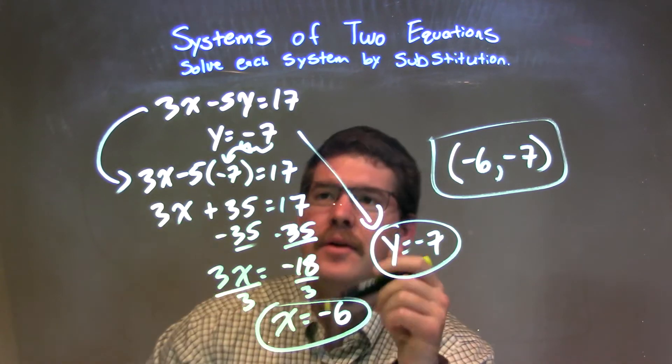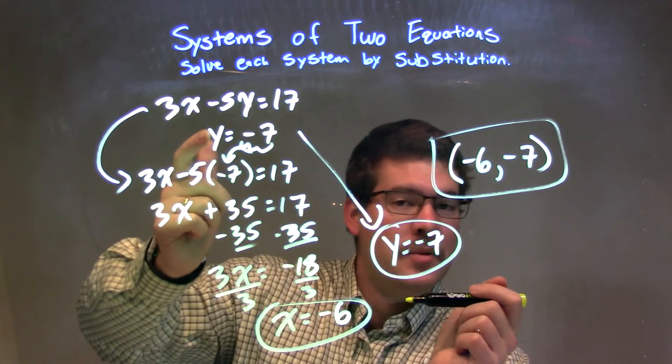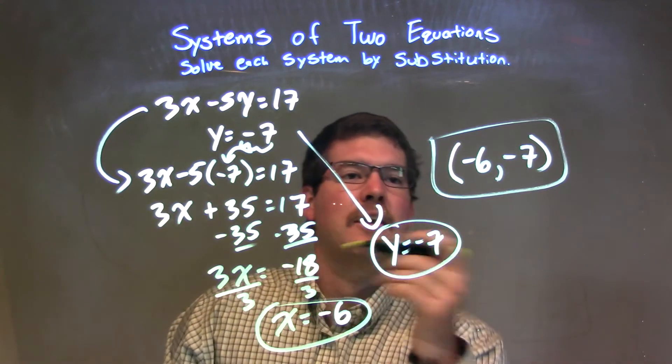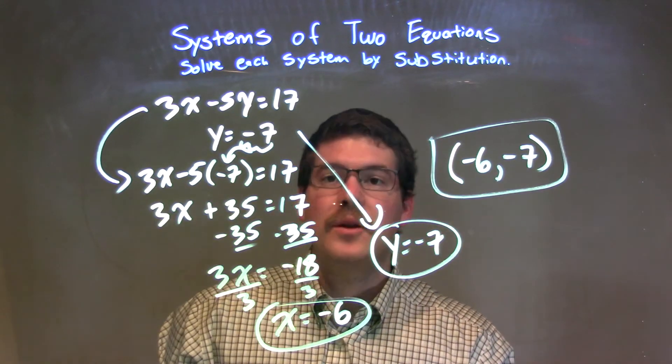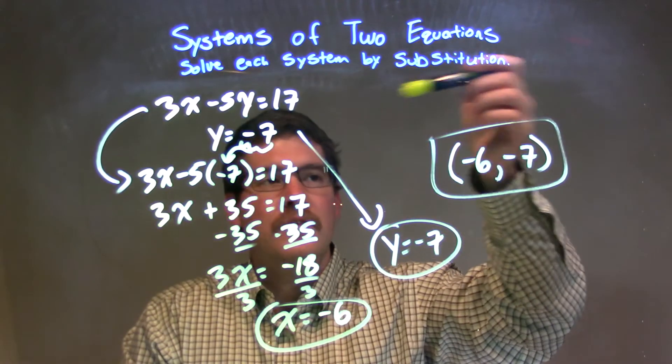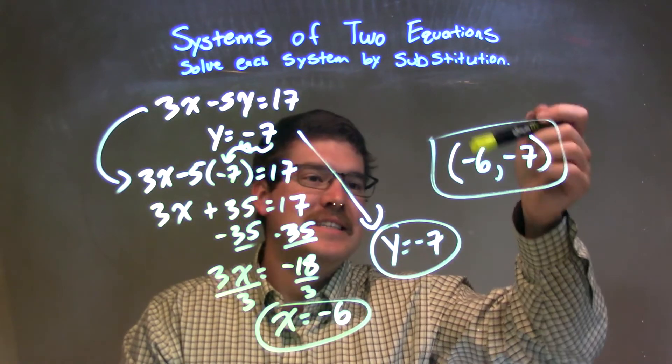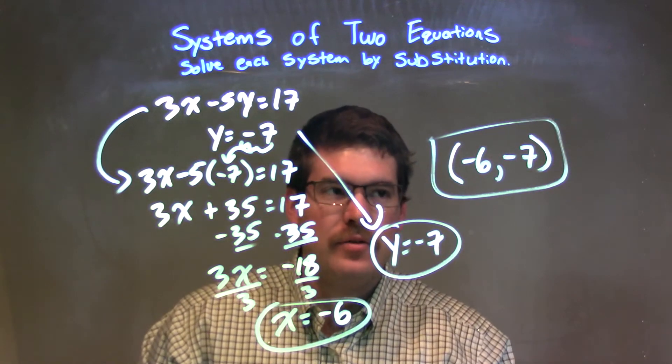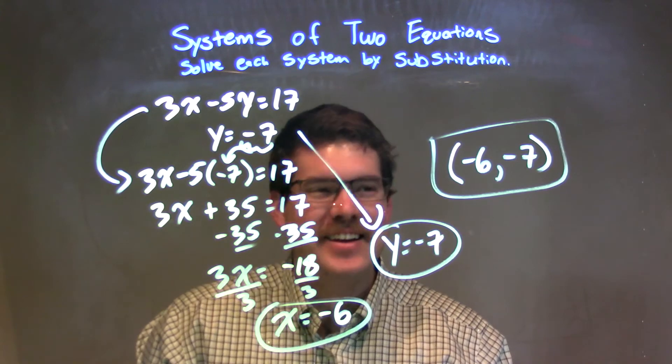I had my x value here. I was already given my y value to be negative 7. I had my y value to get our final answer, which is our coordinate point, and we solved it using substitution, which is negative 6 comma negative 7.